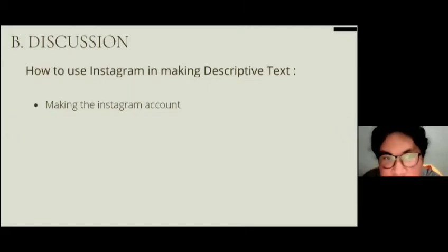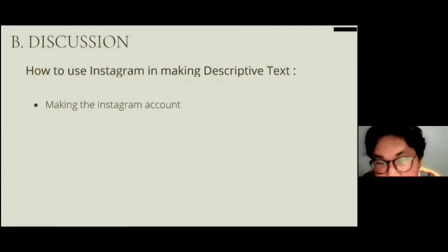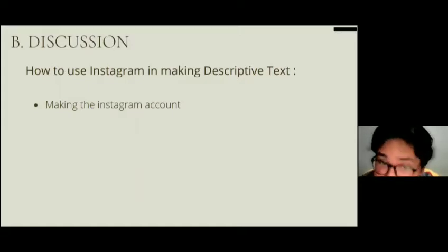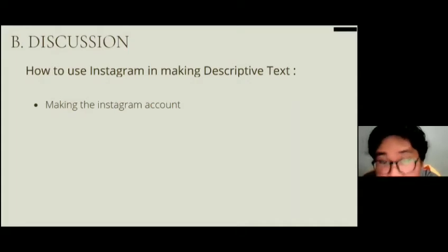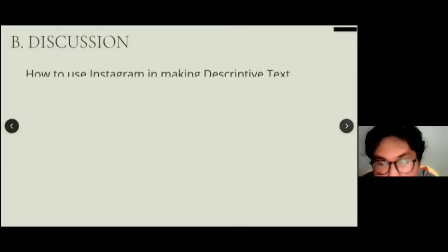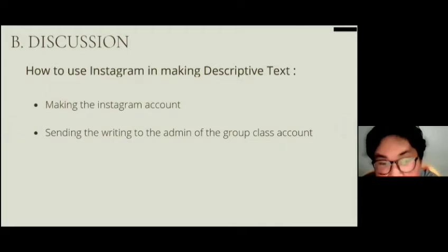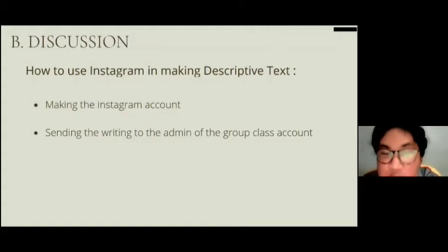Now, how to use Instagram in making descriptive text. Instagram will be used as a tool for online peer review activity in writing. The stages are as follows: first, making an Instagram account — each student must have their own Instagram account. Then the students will be asked to follow the class account, which has already been prepared with a locked profile. After that, each student sends their writing file to the admin, and the admin will post the writing to the class group account.